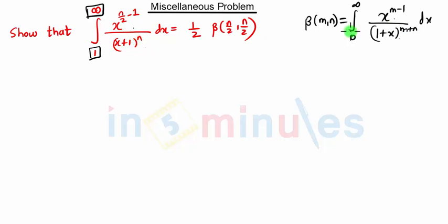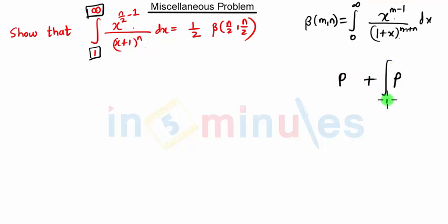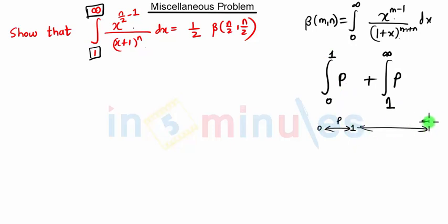We need our integration from 0 to infinity, but here we are given 1 to infinity. We are going to use one property of integration: if we have some term P, we can split it — P with limits from 1 to infinity and P with limits from 0 to 1. We can combine these two integrations into a single integration whose limit will be from 0 to infinity.